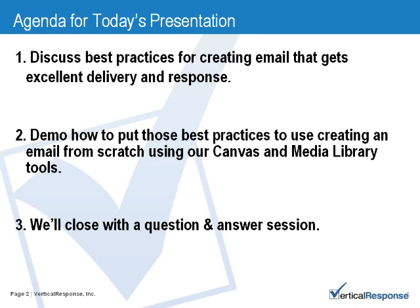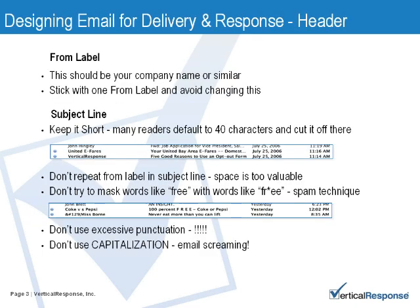Let's jump right into talking about best practices. I want to start by looking at the very first two things your recipients see: your from label and your subject line. First, your from label — this should always state who you are. When writing your from label, always consider what name your recipients would be most likely to recognize. This is generally going to be your company name. If you use a name your recipients aren't likely to recognize, they're going to be far less likely to open your email and far more likely to complain.